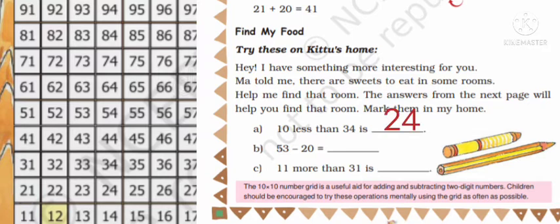So one room in which there are sweets is room number 24. Now 53 minus 20. 53 minus 20 will give you 33. That is you have to come down two steps backward.